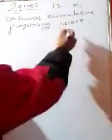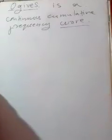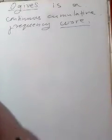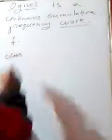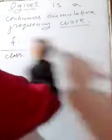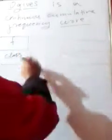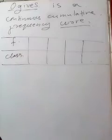So Ogive is a line graph which is constructed with the help of continuous cumulative frequency. This is a curve or line graph. For example, if you have the frequency and the class, first find the data given in the question. Suppose data are given now.